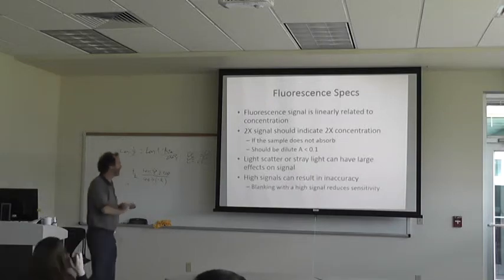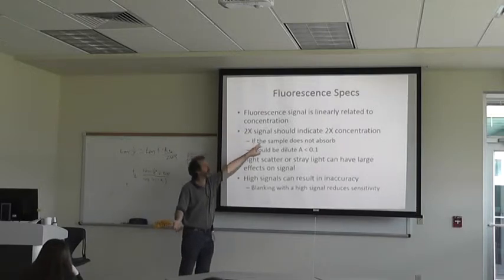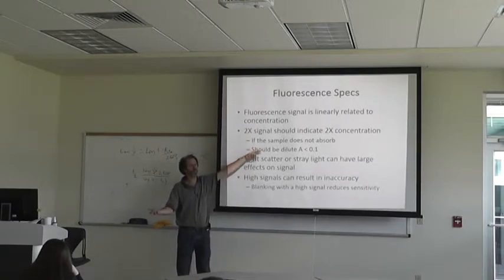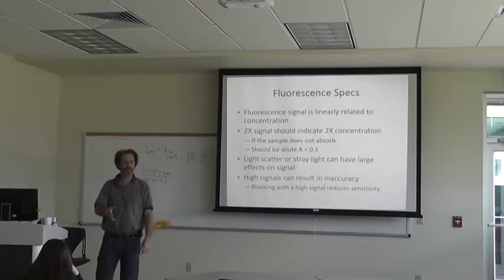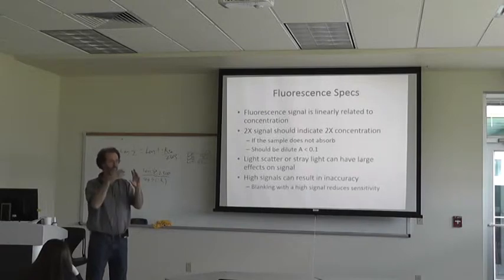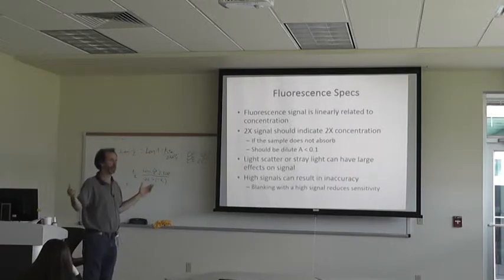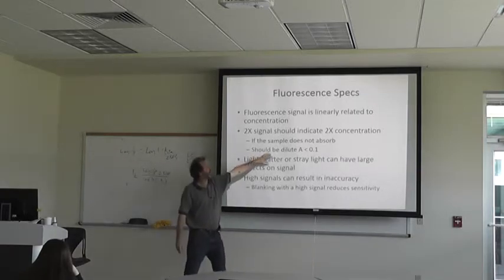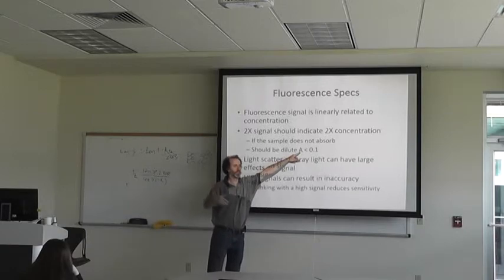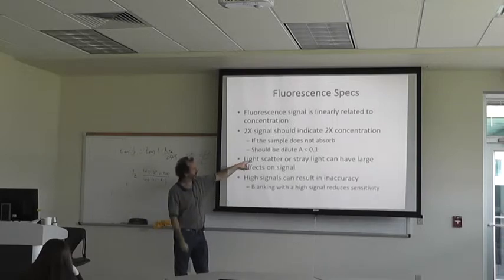Fluorescence signals are linearly related to concentration. Two times the signal should indicate two times the concentration — that's how it's supposed to work, provided the sample doesn't absorb. Sometimes samples can absorb the same light they're emitting. If the fluorescent light generated by the sample is then absorbed by the sample, that's going to throw off your signal. So the sample should be diluted so that the absorbance is less than 0.1, because you want to get all the light through and read all the fluorescence coming off.